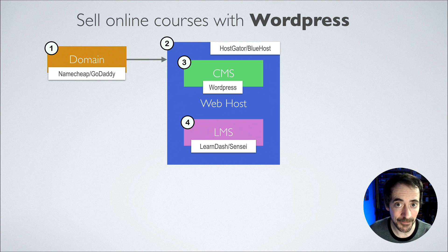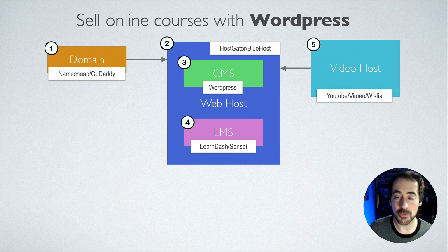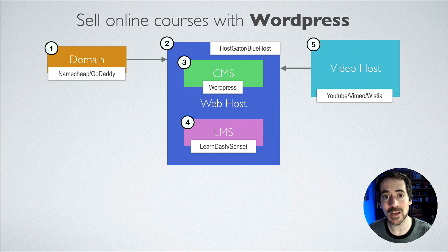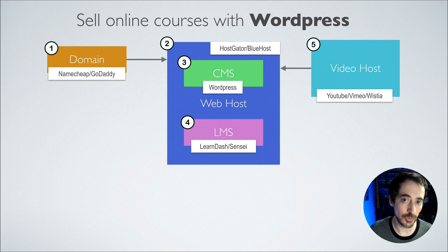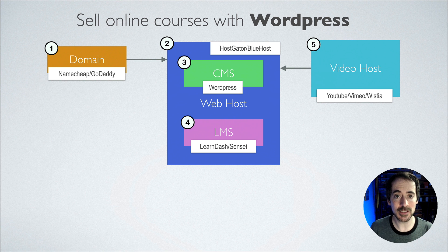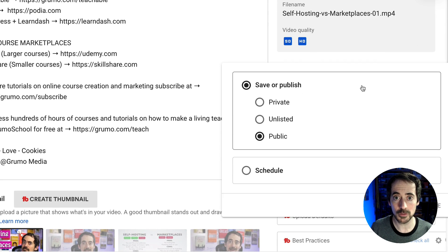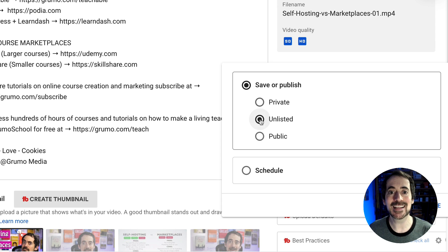Another thing a lot of people don't know is that having WordPress with a learning management system is not enough, because you cannot host your videos on that web host. You need to host your videos on a third-party platform specific to video hosting, because most web hosts don't allow it or aren't optimized to deliver video. Three typical options are YouTube, Vimeo, and Wistia. YouTube is free, but it's not designed to host online courses. When publishing, you can make a video public, private, or unlisted.